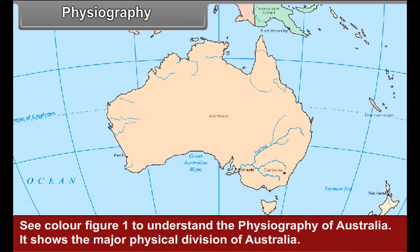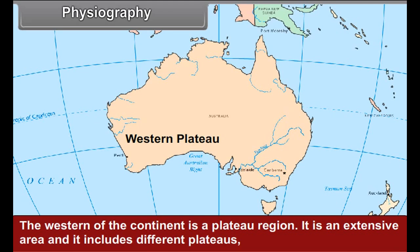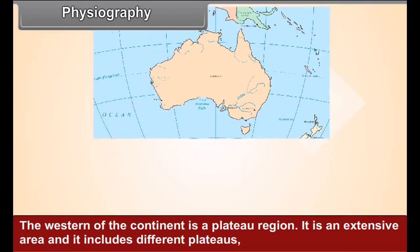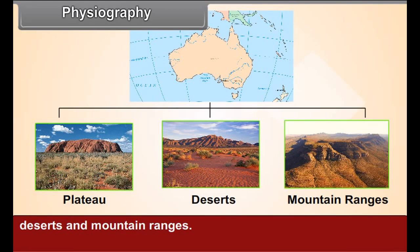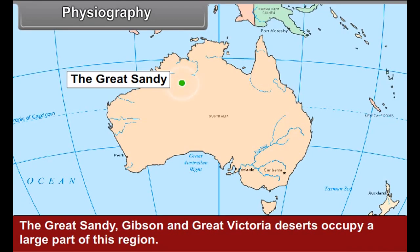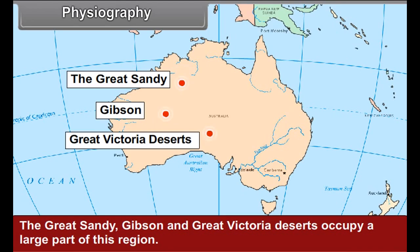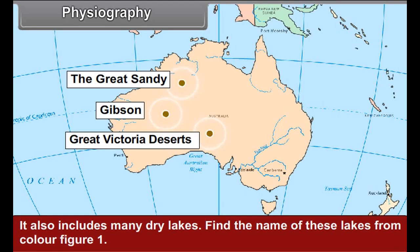The western part of the continent is a plateau region. It is an extensive area and includes different plateaus, deserts, and mountain ranges. The Great Sandy, Gibson, and Great Victoria deserts occupy a large part of this region. It also includes many dry lakes.